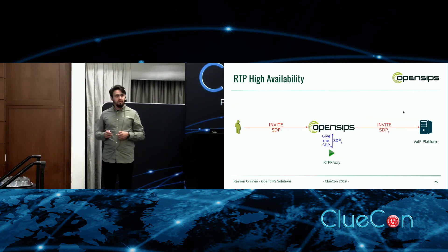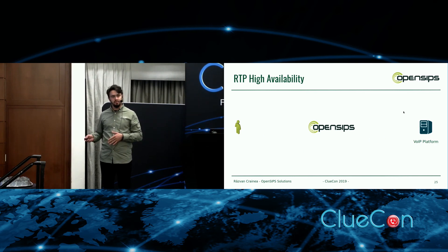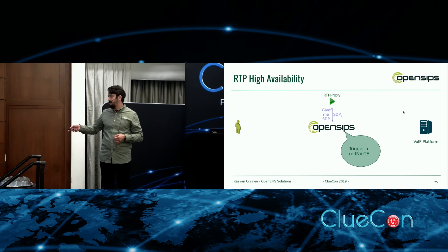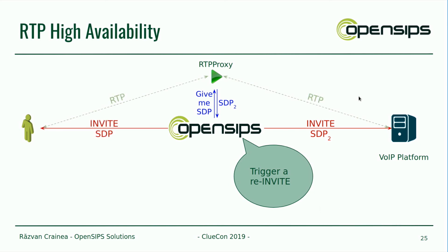This is a short slide showing how to do a failover using RTP proxy or RTP engine. It's quite simple — all you have to do is trigger a re-INVITE and engage a different proxy set, and then the RTP will go through the new RTP proxy.